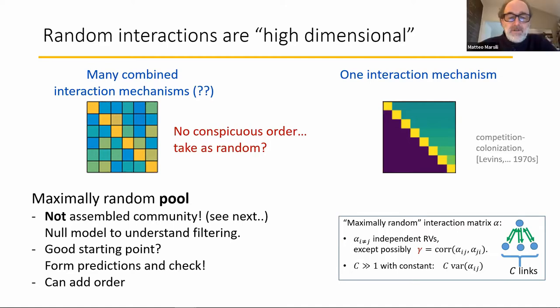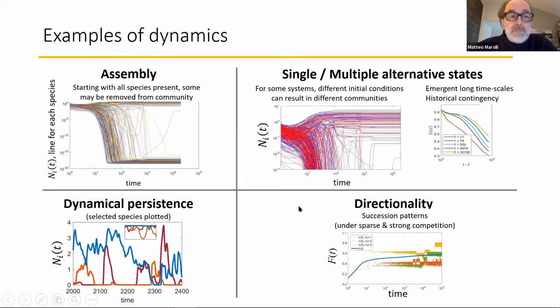I want to emphasize that this massively random matrix means all the numbers are independent random numbers for the pool. Once we assemble, structure is formed in the assembled network. One way to think of what we're doing is that maximum random interactions in the pool is a null model to understand the filtering that the assembly process applies to your network.